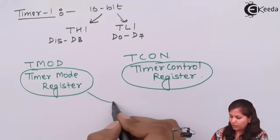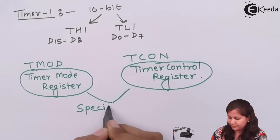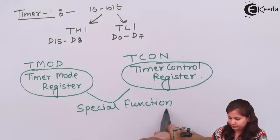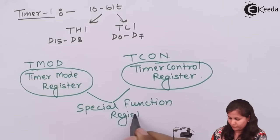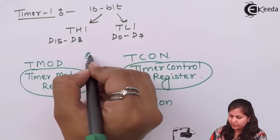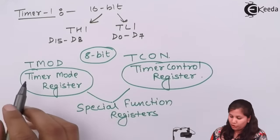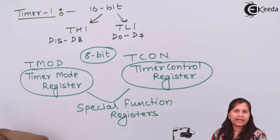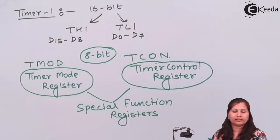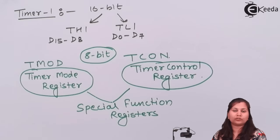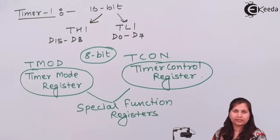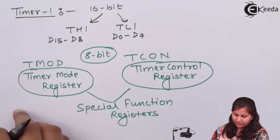Both TMOD and TCON are 8-bit special function registers — 8 bits for TMOD and 8 bits for TCON. TMOD decides in which mode the timers will operate. The timer control register TCON indicates the status of the timers — whether the overflow condition is achieved, or whether a control bit is set. Let us study the format of these registers in detail.